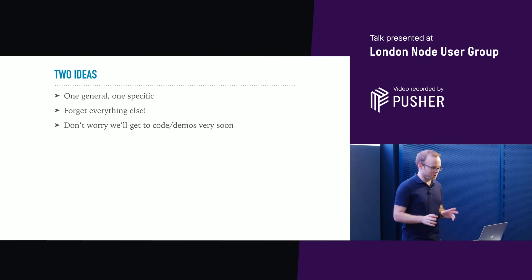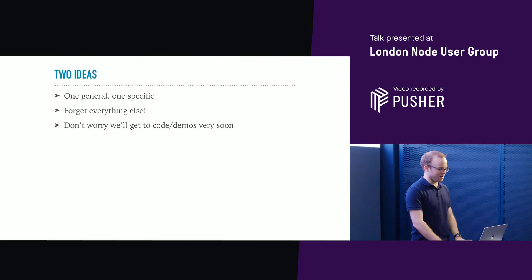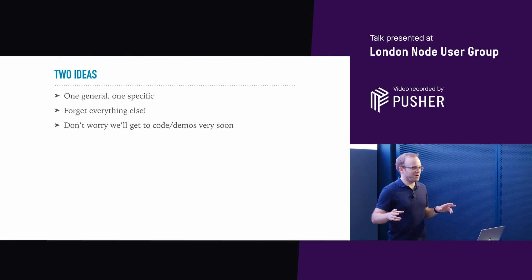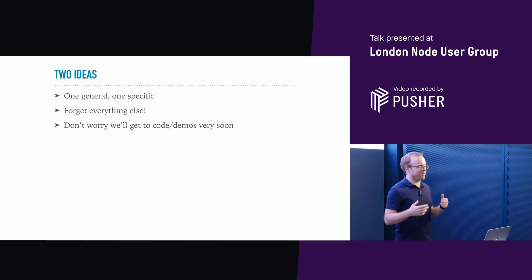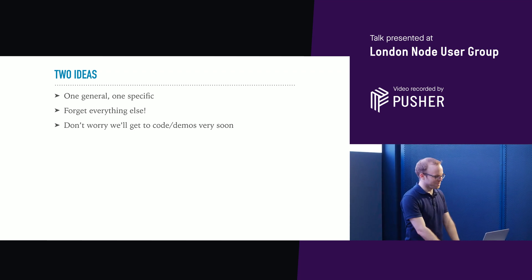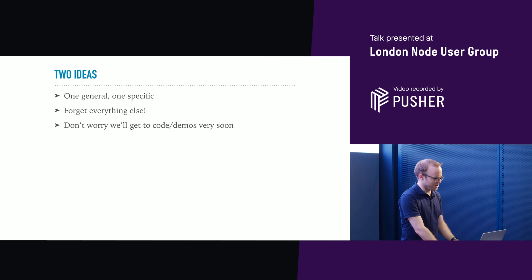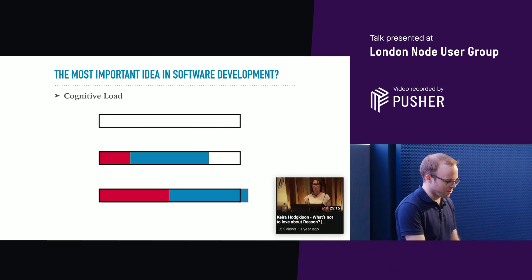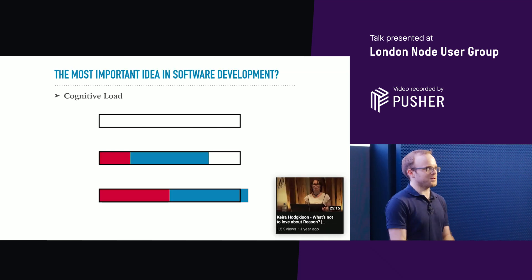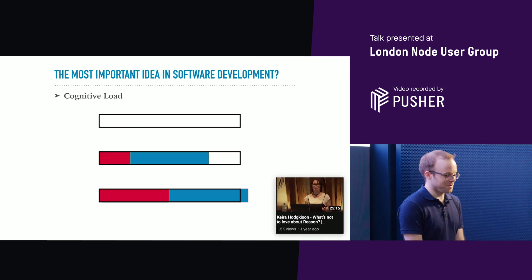One is really general, and one is quite specific to JavaScript. I think if you forget everything else in this talk, that may still be kind of valuable, what you've learned in these two ideas. We're gonna get to some code and demos soon. I want to start with what I think is the most important idea in software development: cognitive load.